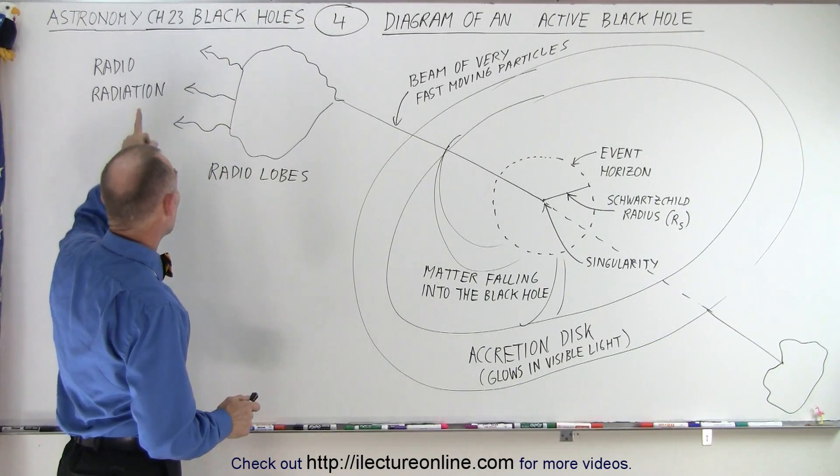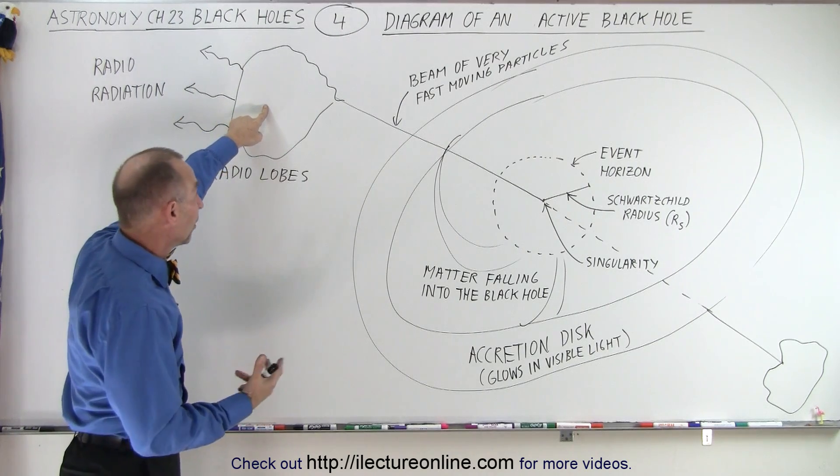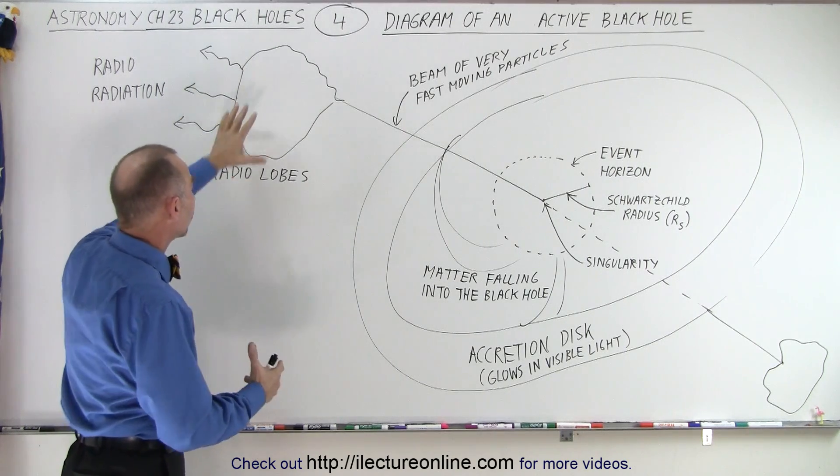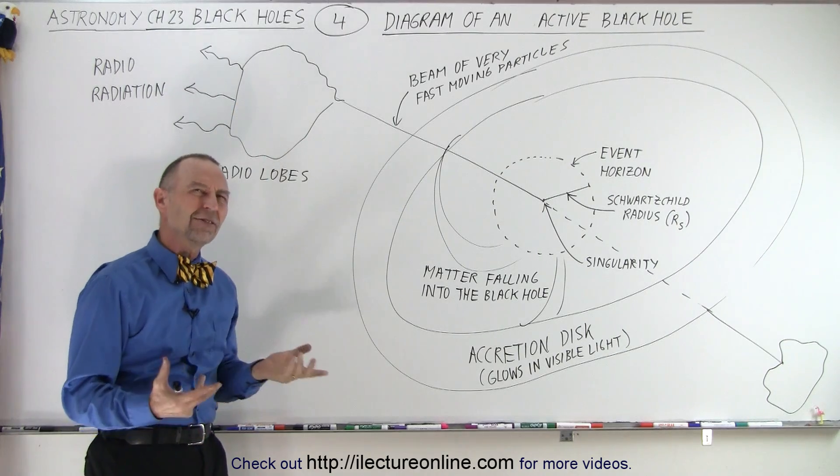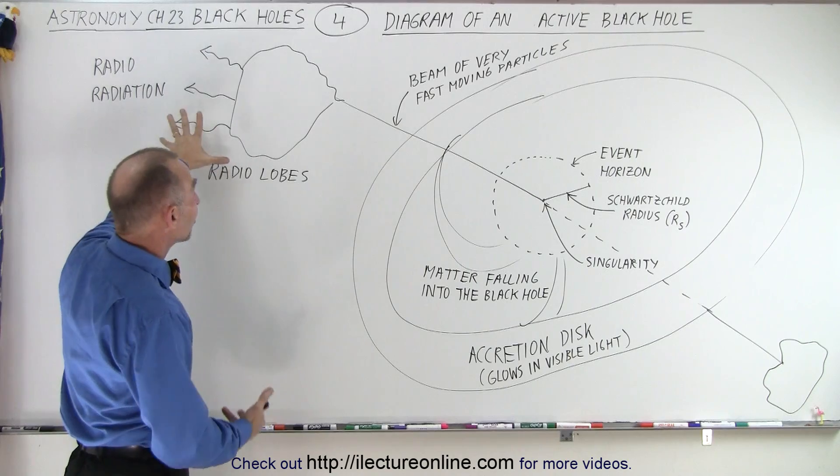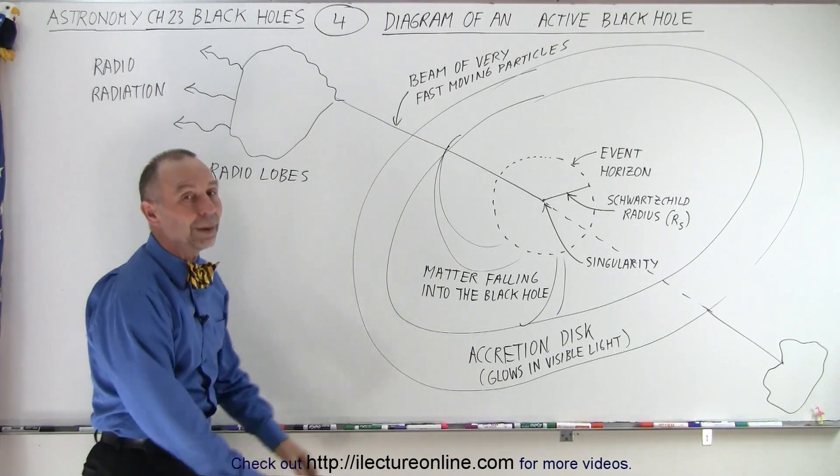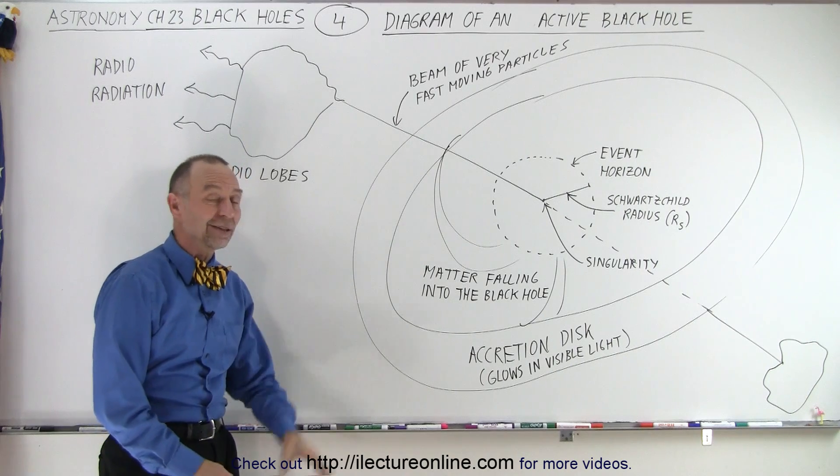Quite often, we know from noticing these radio lobes, which can be detected with radio telescopes—detected, that seems like a better term than photographed—as an indication that there must be a black hole nearby, an active black hole, and that's how we know.